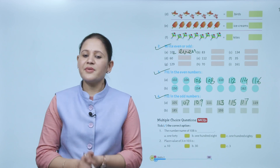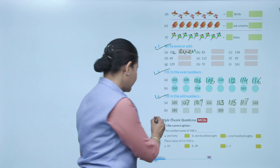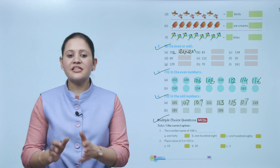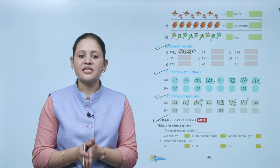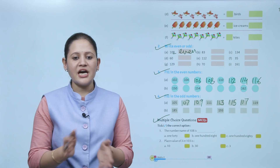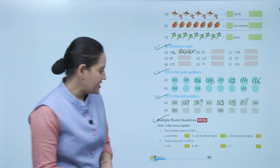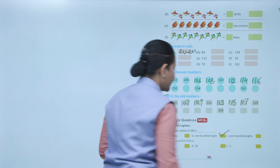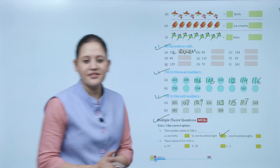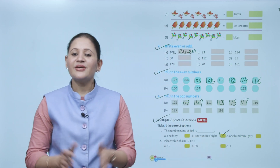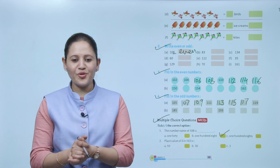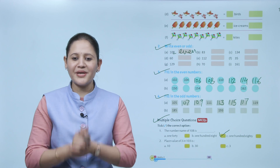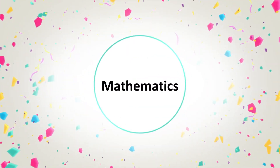Next: multiple choice question. Select the correct option — the number name of 108: option B is the correct answer. So here we end the chapter. I hope you understood it well. Now you have to practice it. Thank you.